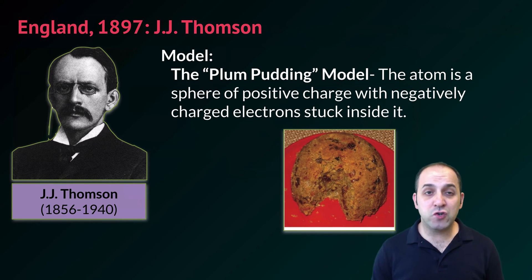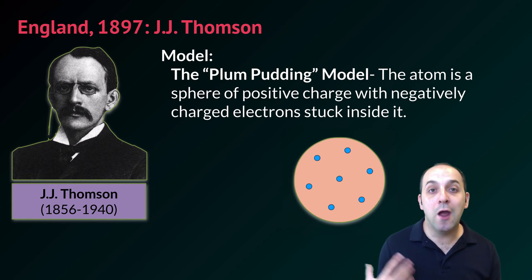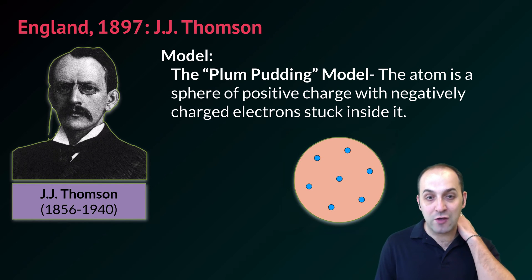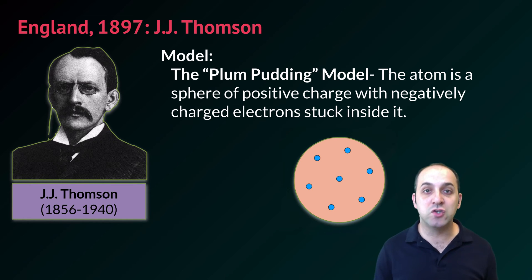We go a hundred years into the future. We get to England again, 1897. We have this model from JJ Thompson, which is called the plum pudding model. The plum pudding model states that the atom is a sphere of positive charge with negatively charged electrons stuck inside of it. This is a picture of an English food called plum pudding. I like to think about it as the chocolate chip cookie model of the atom, where the electrons are the chocolate chips inside of the cookie.